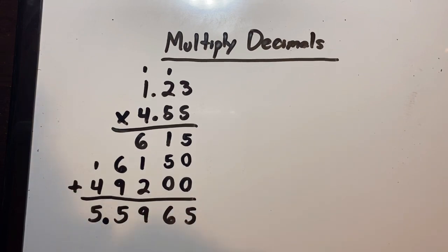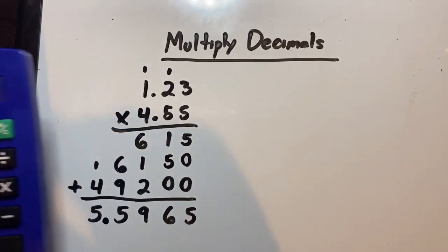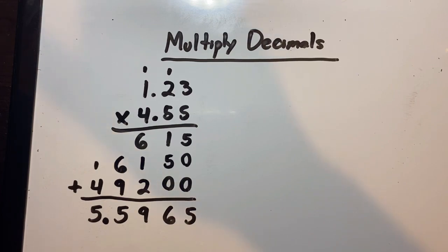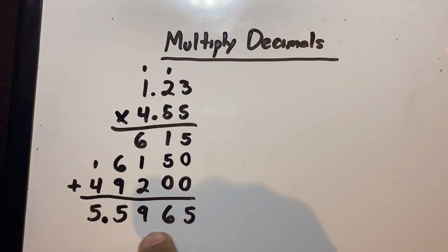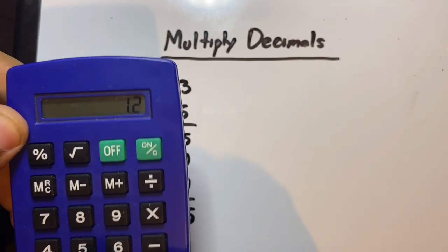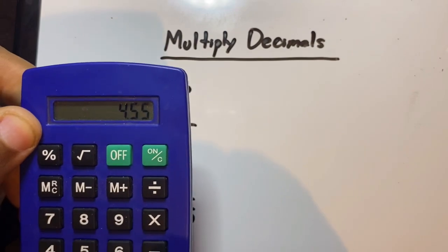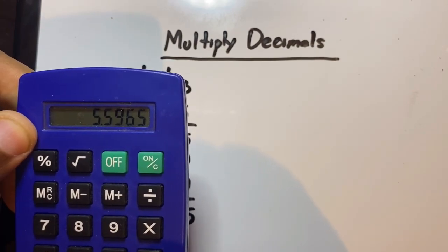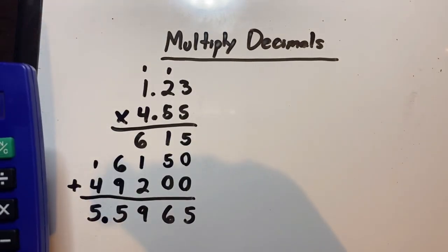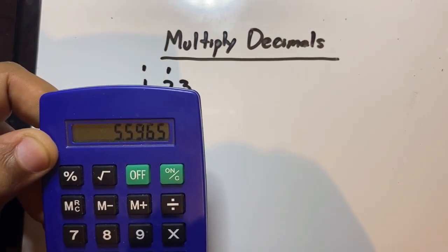Just to make sure I didn't do anything incorrect, I always want to confirm my answer. So 1.23 times 4.55 equals 5.5965. Let's verify: 1.23 times 4.55 gives 5.5965 — and look where the decimal point is, right after the first five. My answer is confirmed, which means this strategy does work.